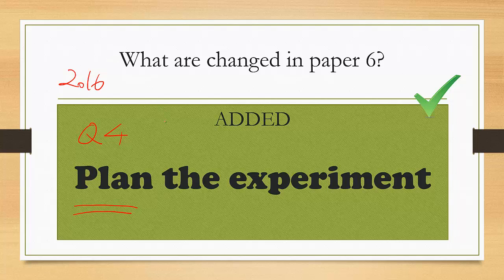But since 2016, once again, you will find all the paper 6, that means different time zones, no matter which paper it is, there must be a question, usually that's question number 4, which will ask you to plan an experiment.